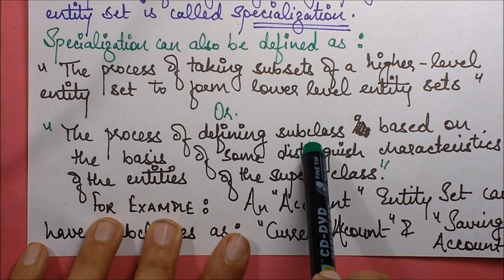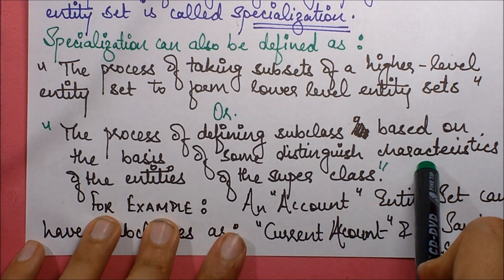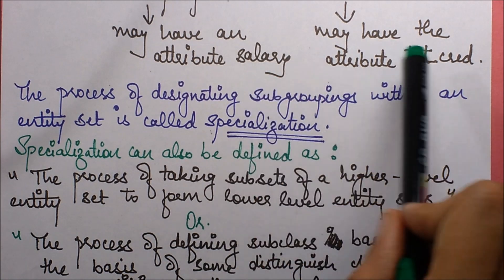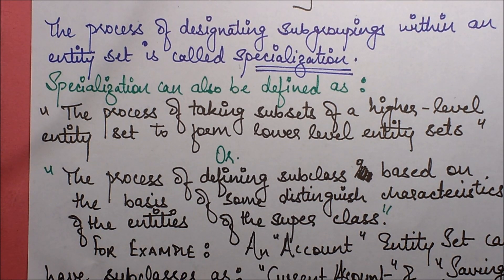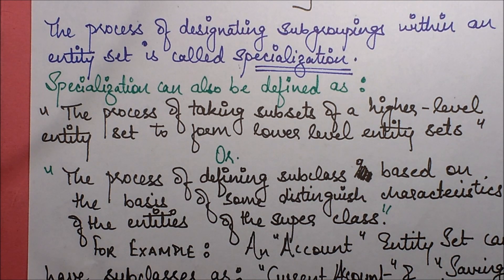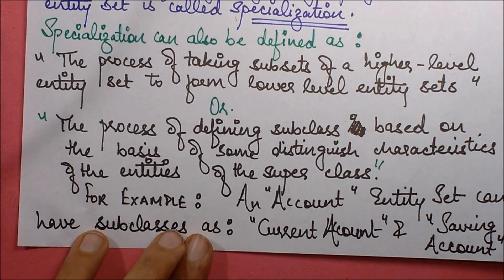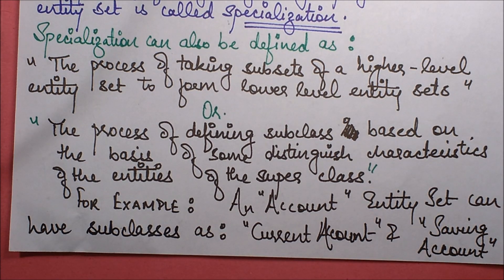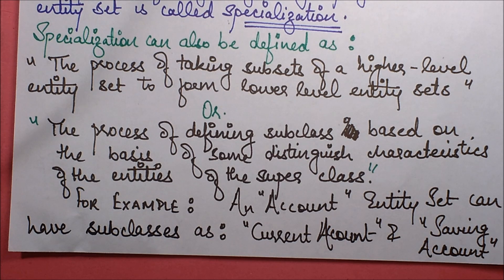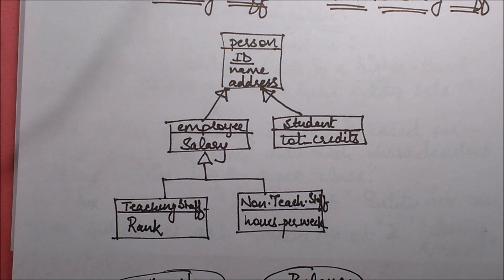We can also define it as the process of defining subclasses on the basis of some distinguished characteristics — such as salary and total credits — of entities of the superclass. For example, an 'account' entity set can have subclasses as 'current account' and 'saving account', but the attributes of both accounts may differ.